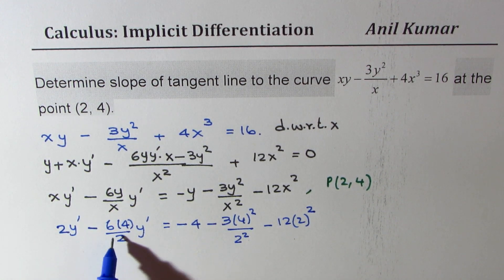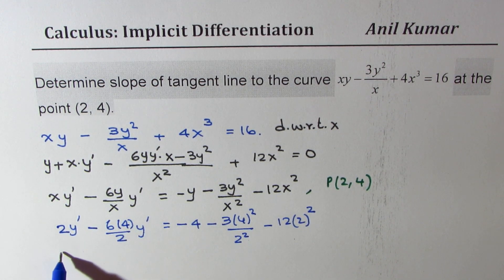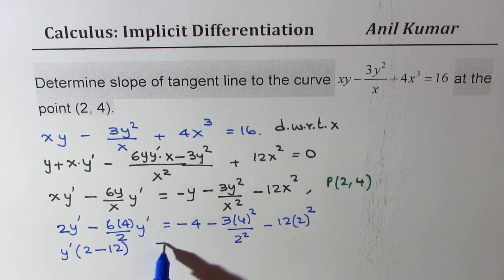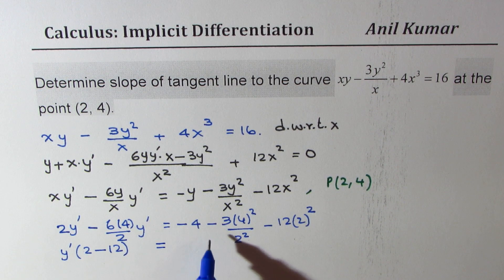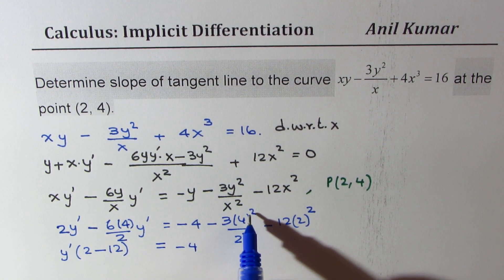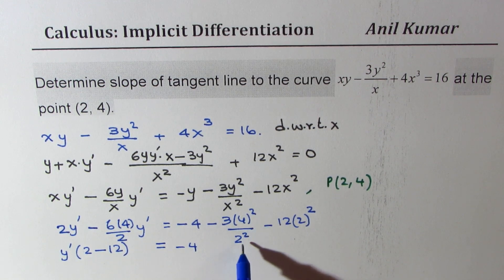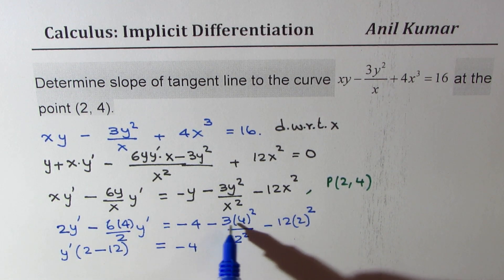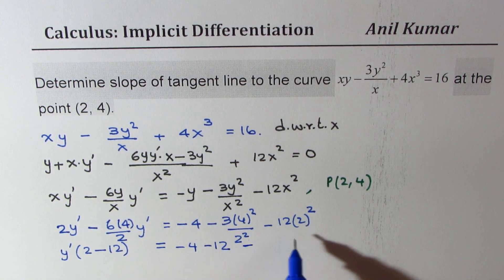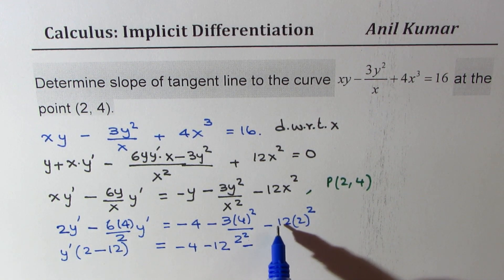Now that is 2 y dash, and here it becomes 12, so we have y dash, 2 minus 12 equals 2. Now we have minus 4. So 4 square is 16 divided by 4 is 4. 4 times 3 is 12, and here we get minus 4 times 12, 48.